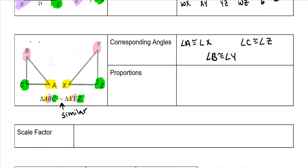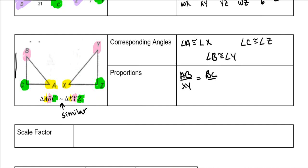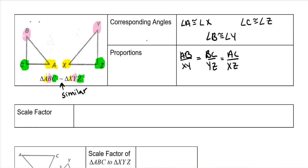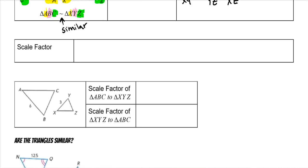Your sides work the same way. Yellow to pink is AB; yellow to pink on the other one is XY. Pink to green is BC, and on the other one pink to green is YZ. Yellow to green on the left corresponds to yellow to green on the right, which is XZ. So it's very similar to congruent triangles — the angles are still congruent, but now the sides are proportional rather than congruent, and sides always have a scale factor, which is the ratio of lengths of corresponding sides of two similar polygons.